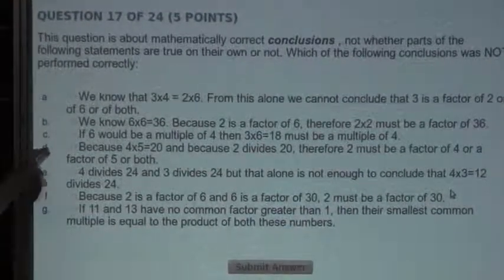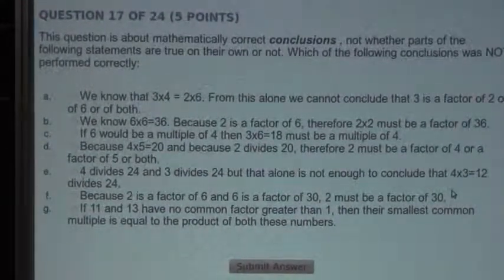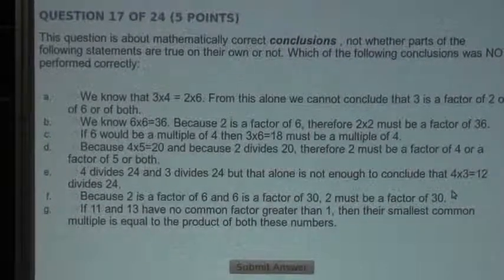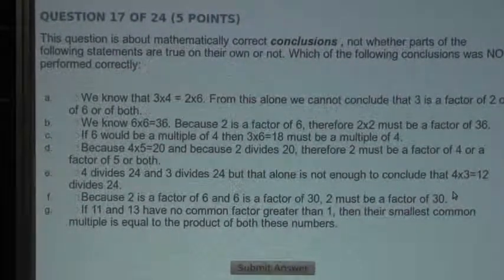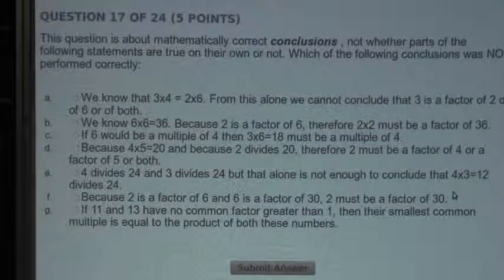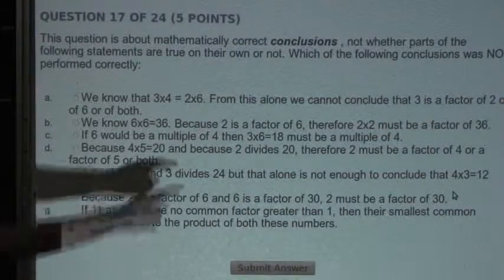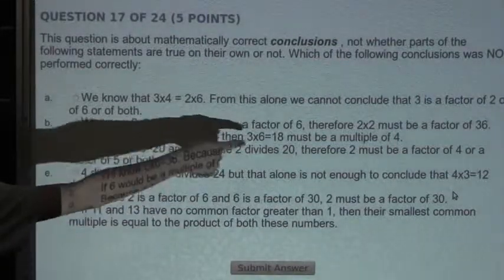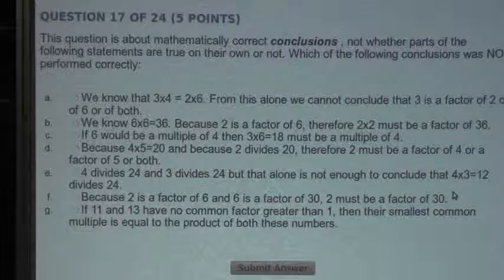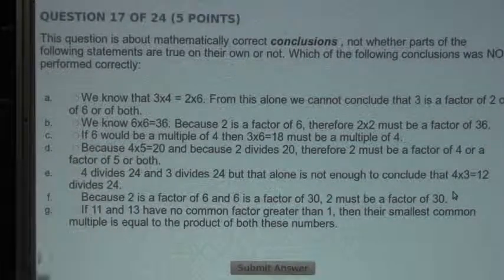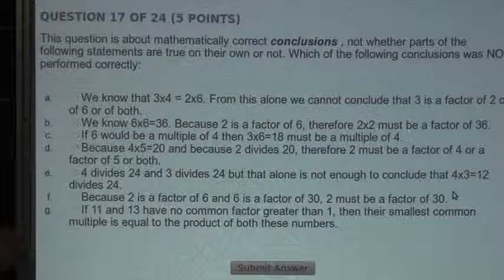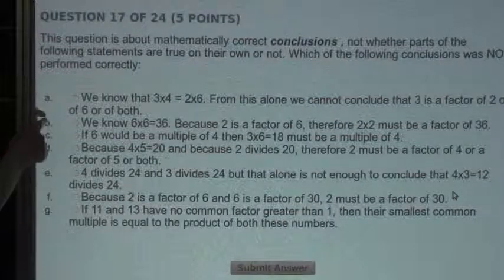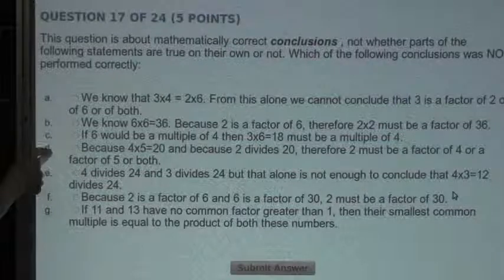So let's look at Statement D. Because 4 times 5 equals 20, and because 2 divides 20, therefore 2 must be a factor of 4 or a factor of 5 or both. So instead of using 2, we will use 20. So we know 20 divides 20, but 20 would not be a factor of 4 or 5. So Statement D would be false. It would also be false because Statement A is the exact opposite of Statement D and Statement A was correct. So Statement D must be false.